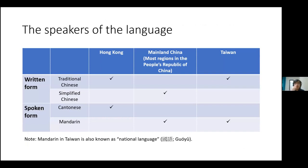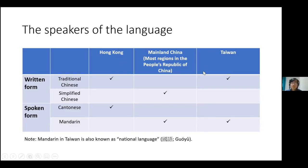We will look at the written system and the spoken system of Cantonese-Chinese. In Hong Kong, people write in traditional Chinese — the same as Taiwan. However, in mainland China, people use simplified Chinese as their written language.